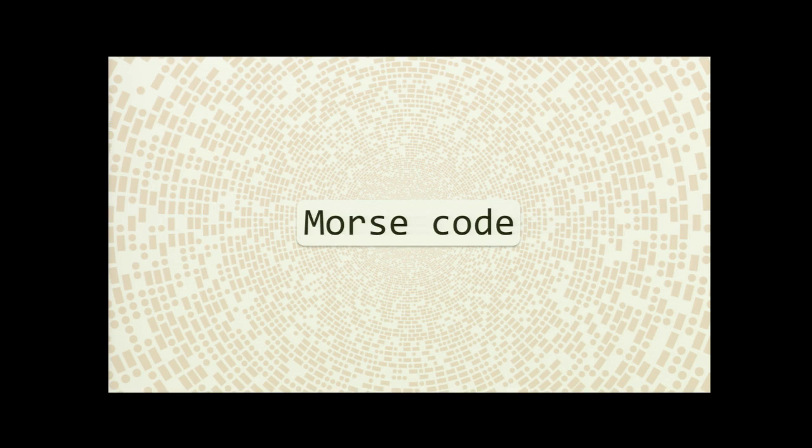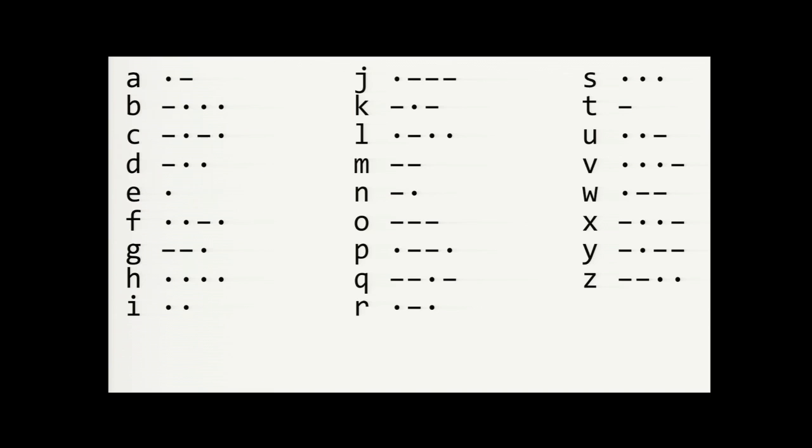Morse code is conceptually similar to entropy encoding. It was developed by Samuel Morse in the 1840s. Here are the Morse codes for each of the 26 letters in our alphabet. As you can see, shorter codes are assigned to letters that are more frequently used, and longer codes are assigned to less frequently used letters. Of course, the most famous Morse code is SOS, and it's actually a special code that's assigned to the entire word.